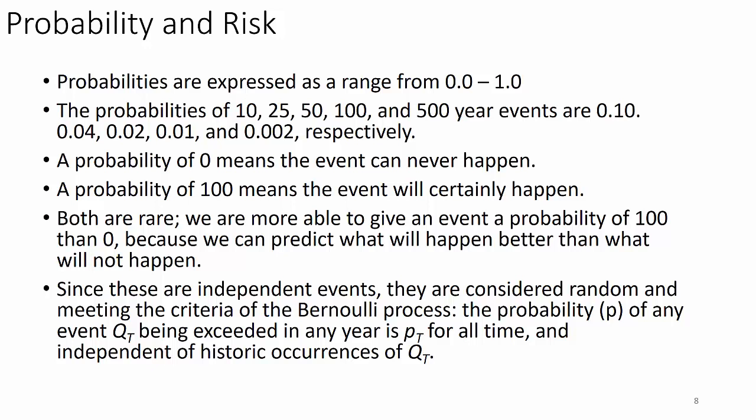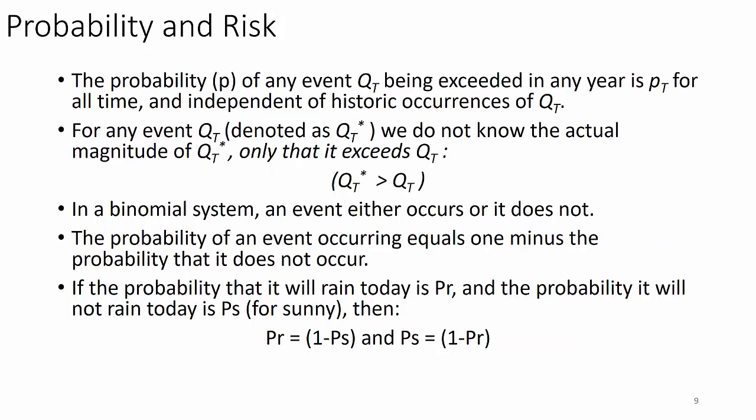Since these are independent events, they are considered random and meet the criteria of the Bernoulli process. The probability P of any event Q-sub-T being exceeded in any year is P-sub-T, for all time and independent of historic occurrences of Q-sub-T. We're in for the language of probability for the next four weeks — it's a specialized mathematical language of risk, so learn it. For any event Q-sub-T, denoted Q-sub-T-asterisk, we do not know the actual magnitude — only that it exceeds Q-sub-T.